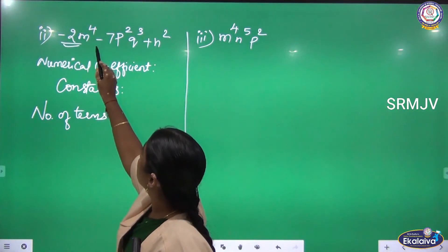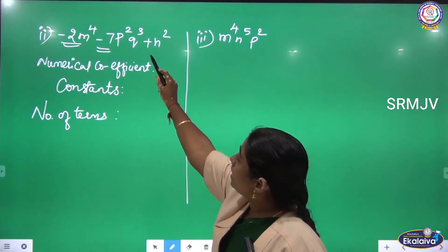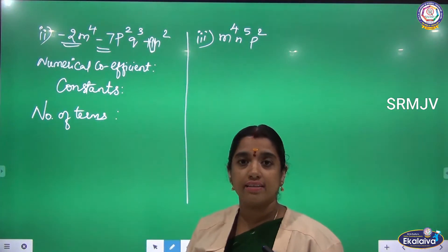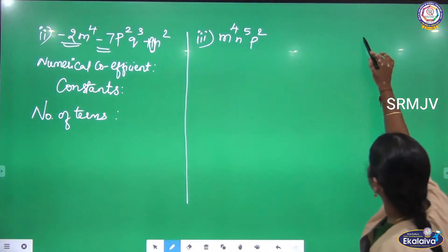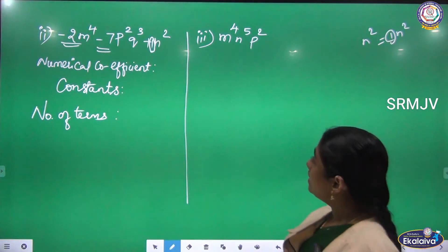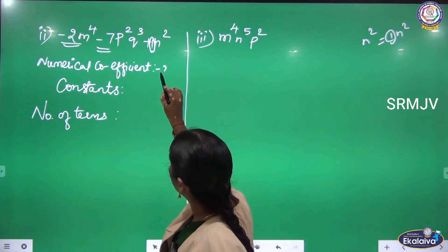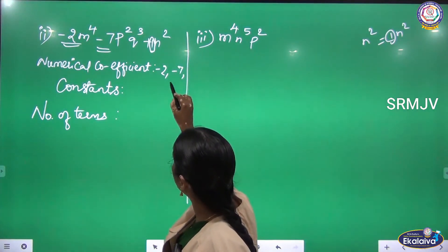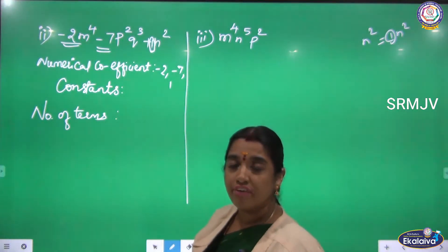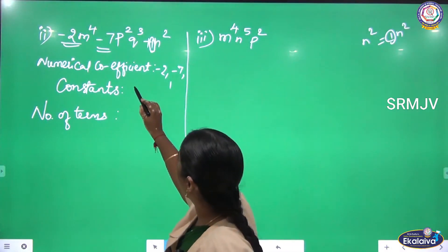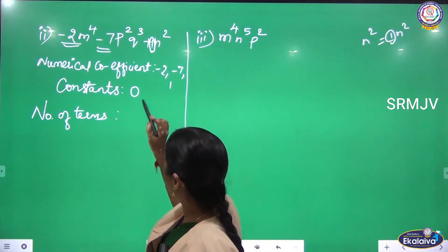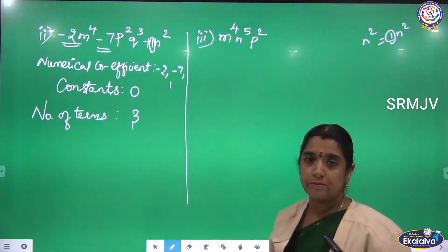Moving to the next expression. The numerical coefficients are -2 and -7. There is also +n², and here the coefficient of n² is 1 — you must consider that 1 is there. So the numerical coefficients are -2, -7, and 1. Are there any constants? No constants like standalone numbers, so constants = 0. Number of terms: 1, 2, 3 — so 3 terms.